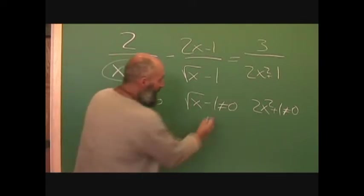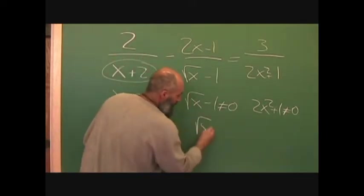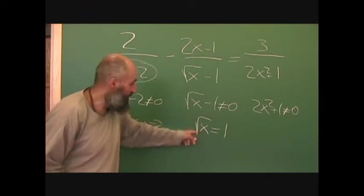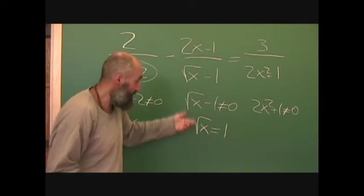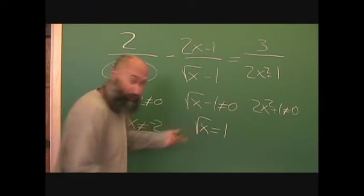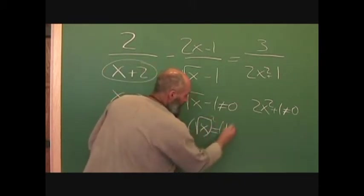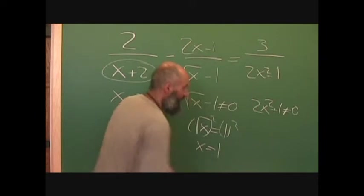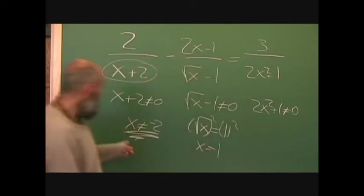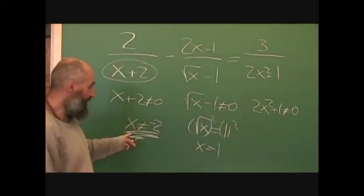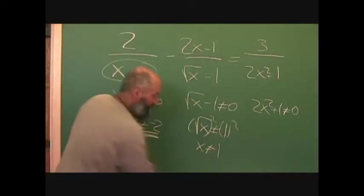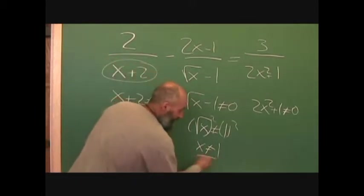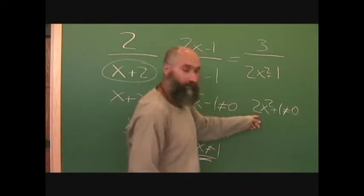For the second one, over here, you bring the 1 over and get square root of x equals 1. To get x by itself, you square both sides, so x equals 1 squared, which is 1. So the restriction is x can't equal 1. And x can't equal negative 2 from the first denominator.